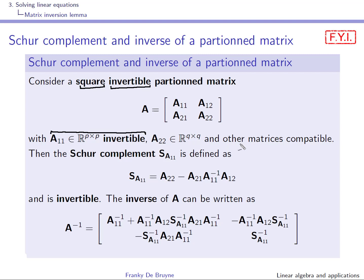So this means that if A11 is P times P and A22 is Q times Q, then A12 must have the same number of rows as A11, so P, and the same number of columns as A22. By the same argument, A21 is Q times P. So the matrices are compatible.